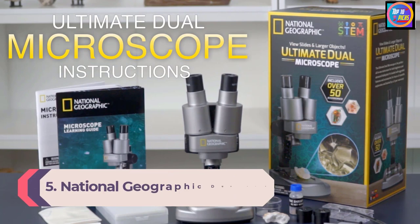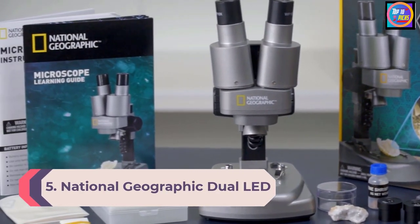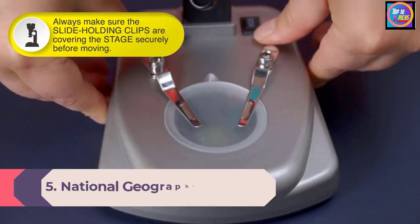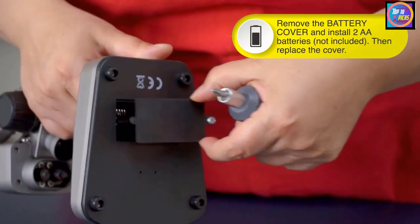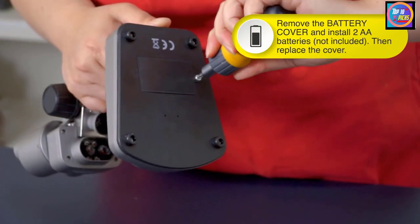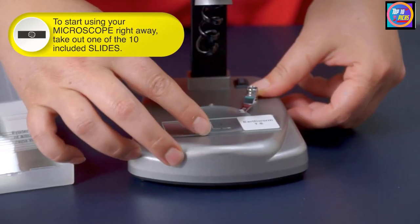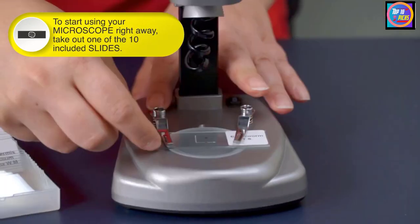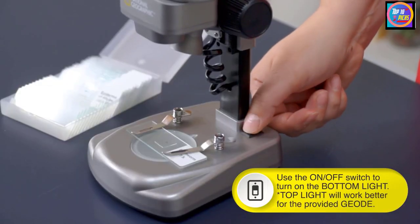Number 5. National Geographic Dual LED Student Microscope. This microscope comes with high-quality glass optics for 20x and 50x magnification. With only two settings to choose from, a child will quickly understand how to use the microscope without always needing adult supervision. Its highest magnification lets you see 5mm within the object, which allows a fun insight without making the vision too complex for children.